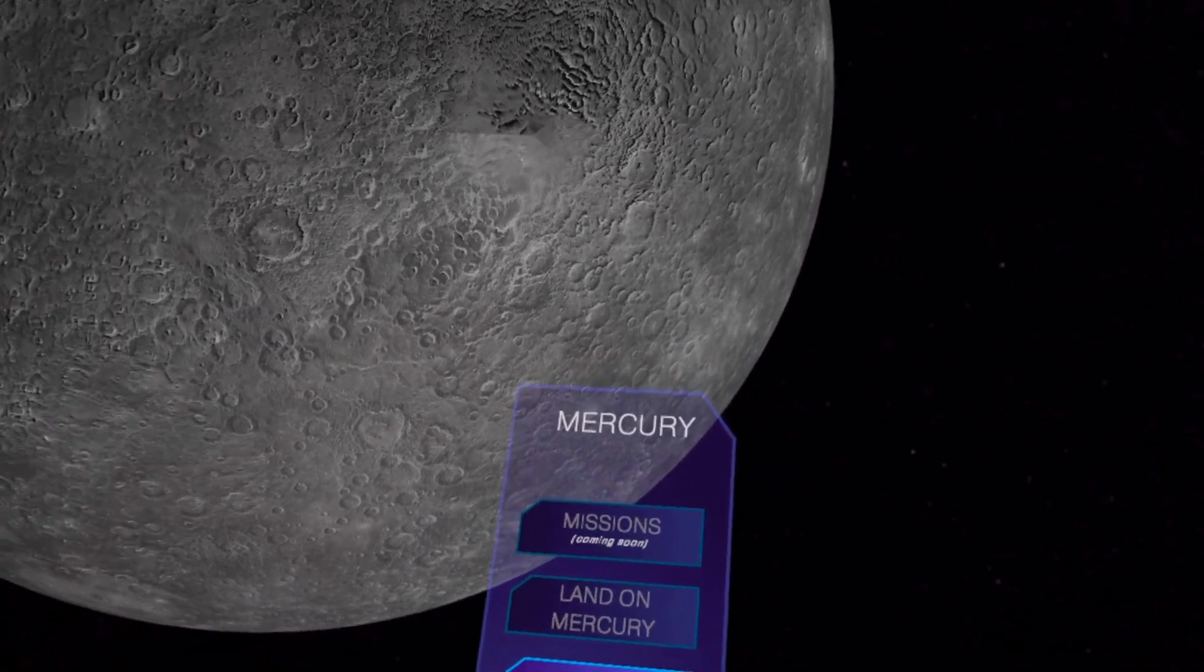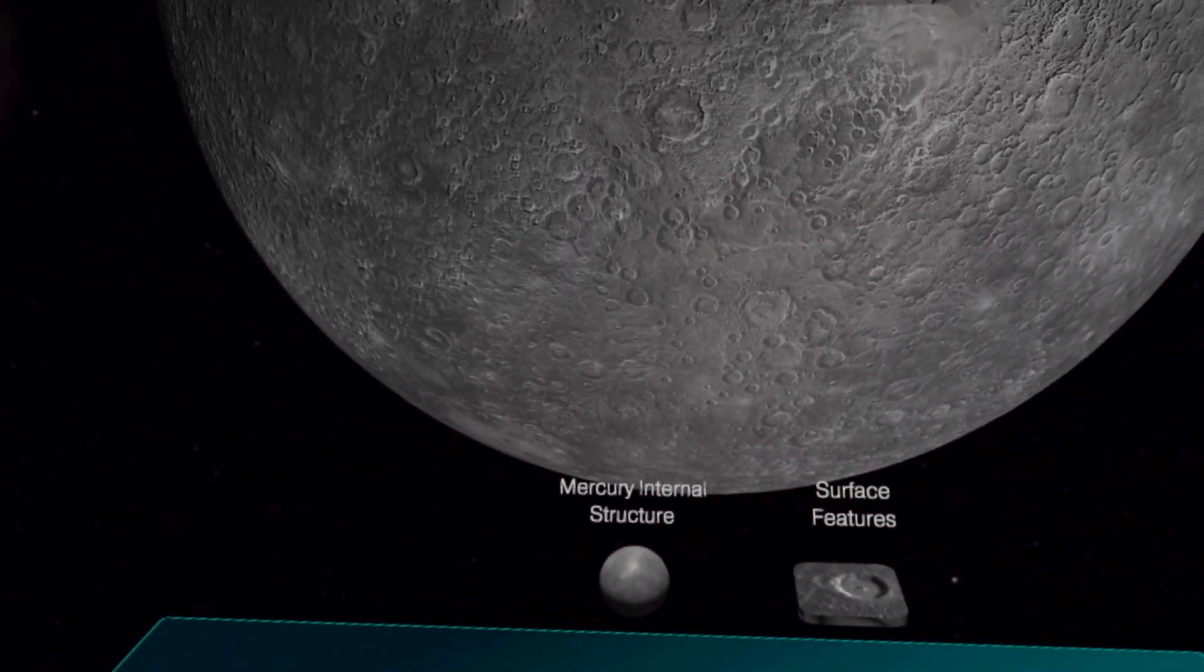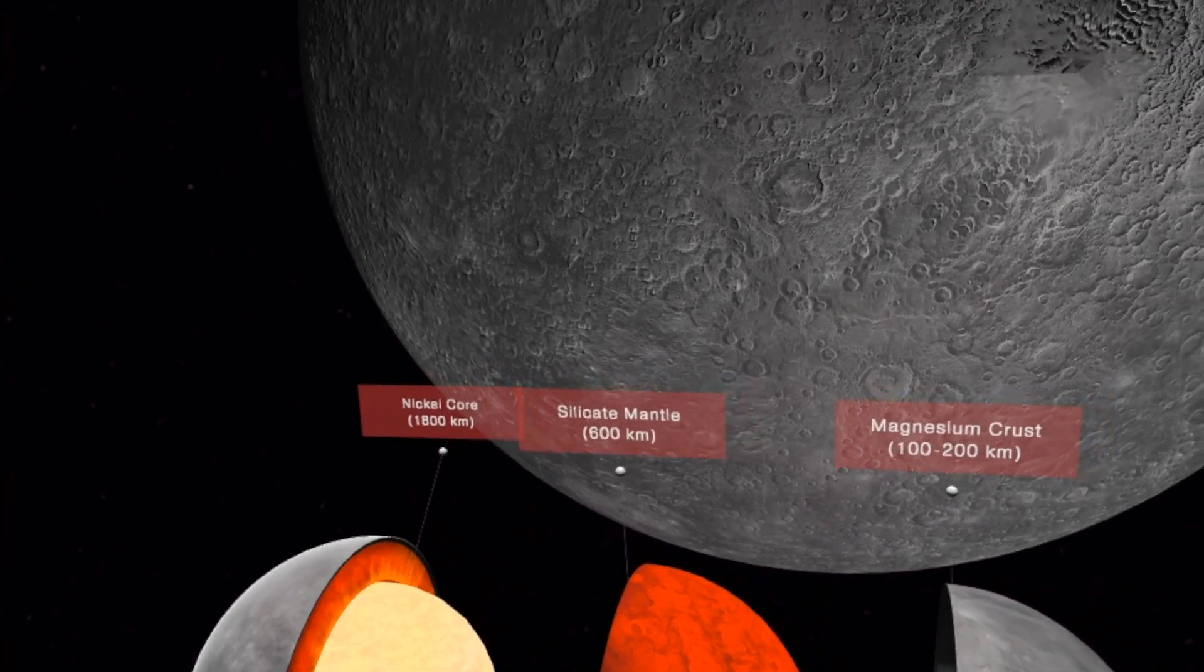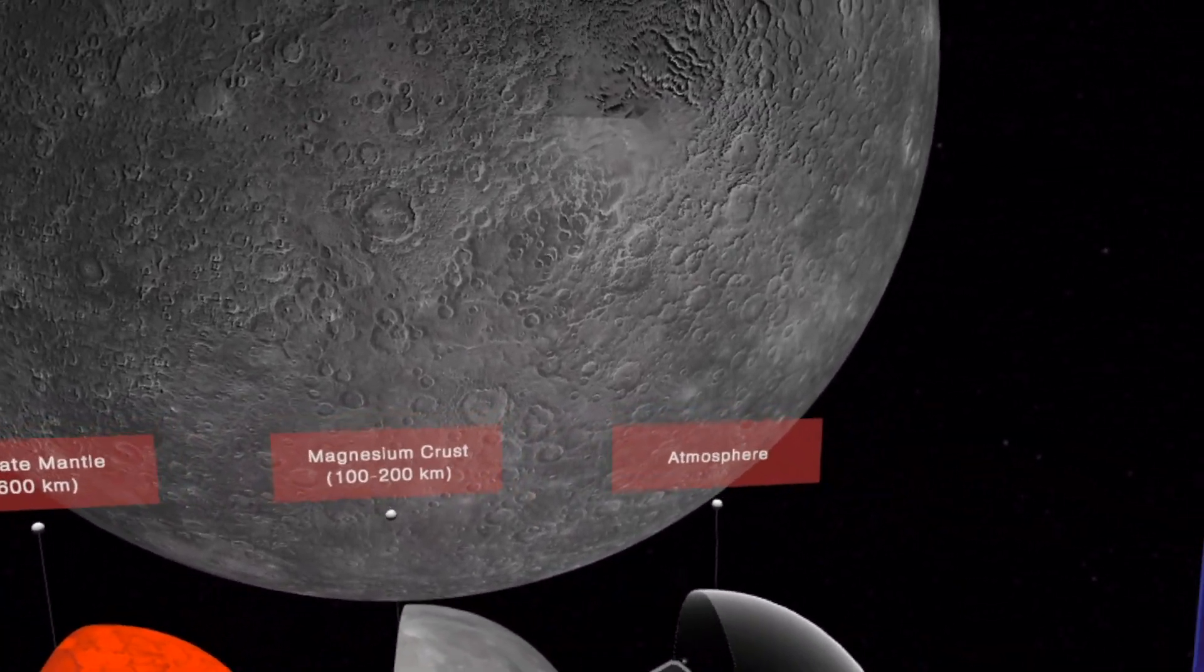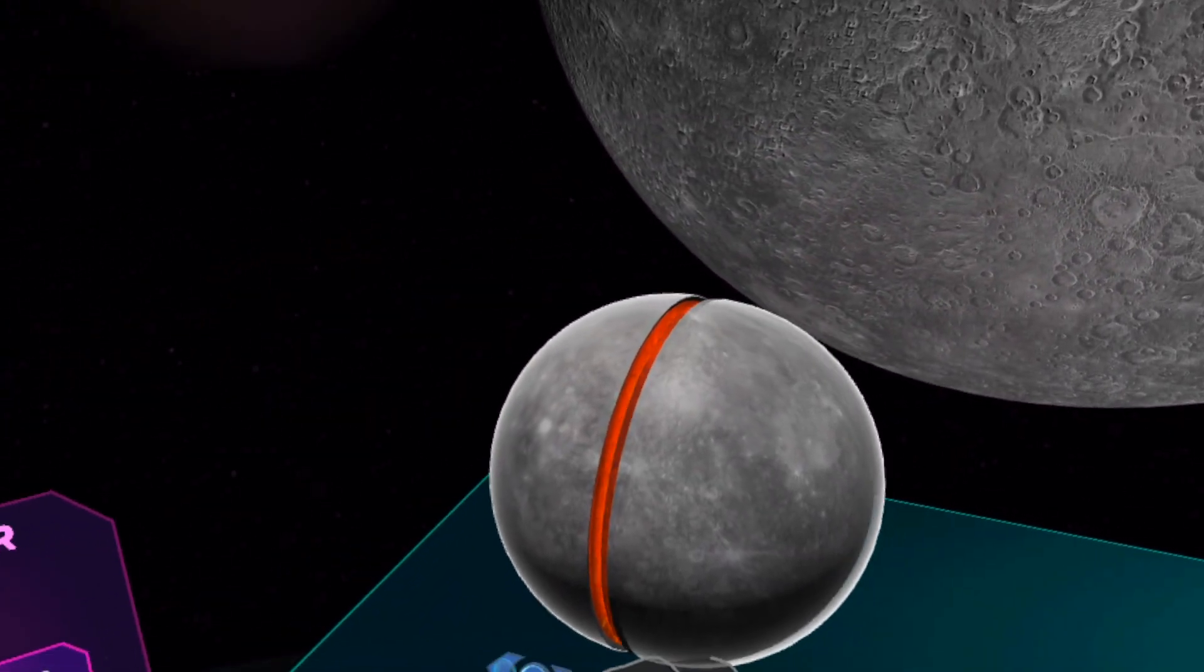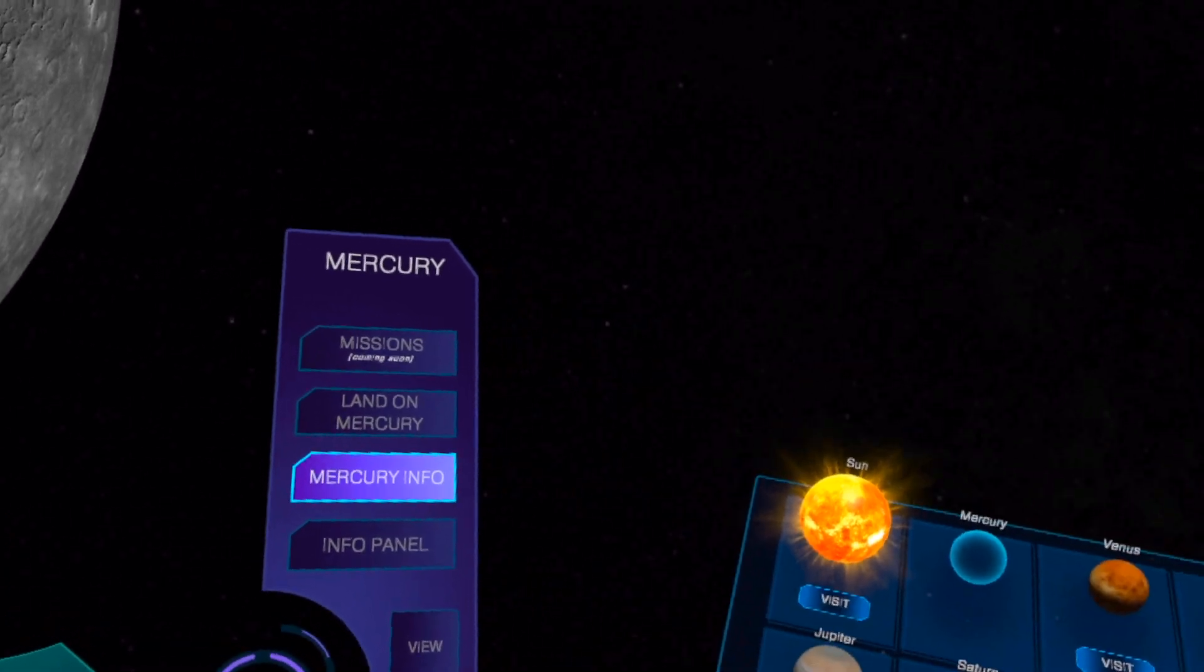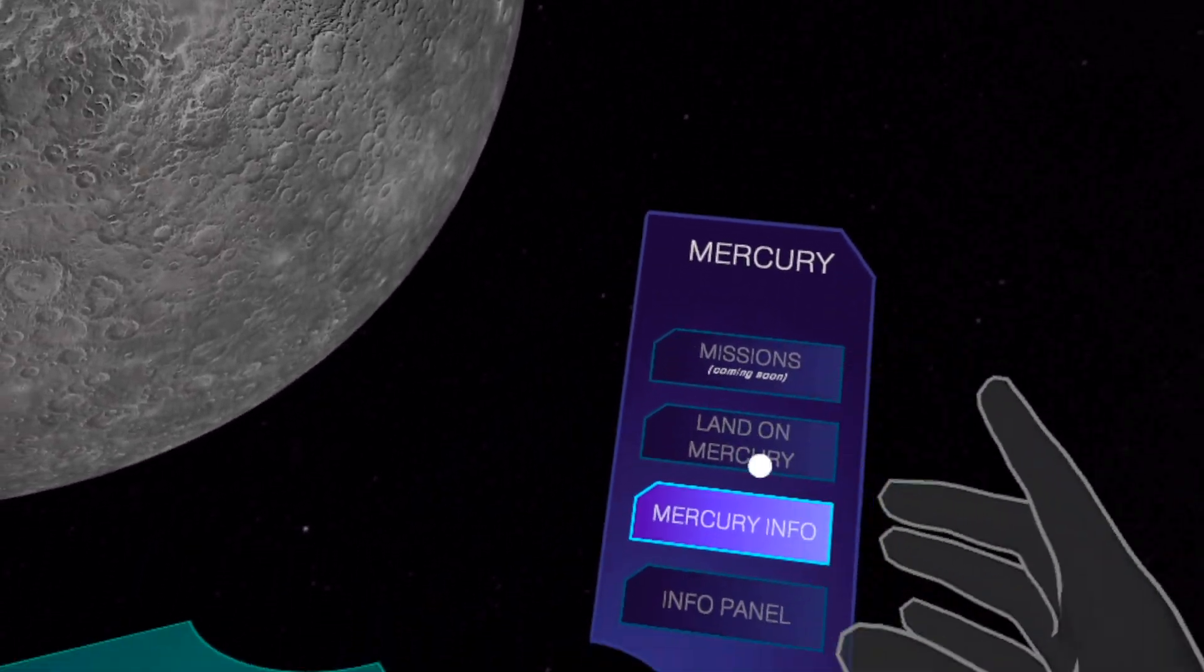You can read it here in the Mercury info. Internal structure, let's see how it's made. You see nickel core, silicate mantle, magnesium crust, and atmosphere. It's 0.2 atmosphere - it has absolutely no atmosphere. You cannot land on Mercury. Missions coming soon.